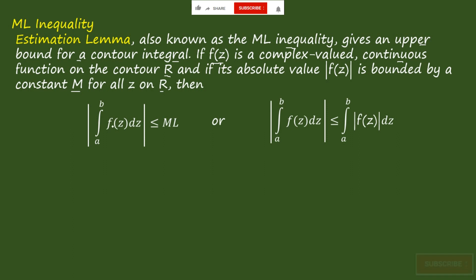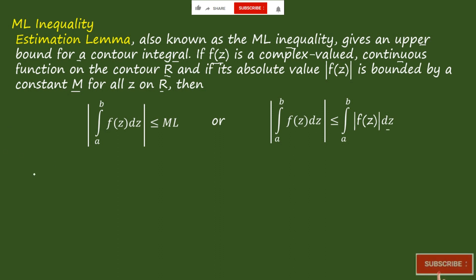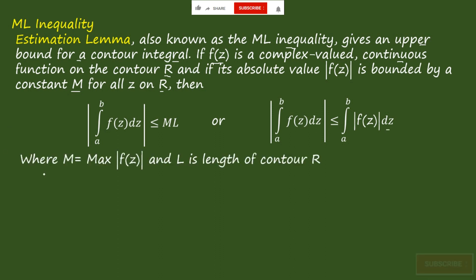The equation is: the modulus of the integral from a to b of f(z) dz will be less than or equal to M·L, or equivalently less than or equal to the integral from a to b of |f(z)| dz. Here M is the maximum value of |f(z)| and L is the length of the contour Γ.